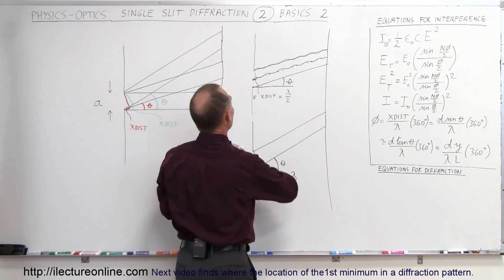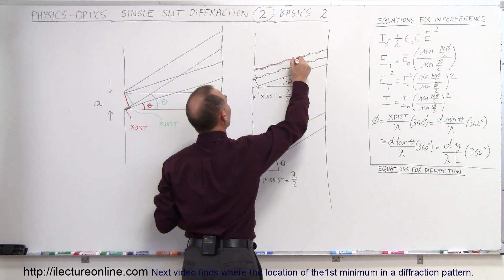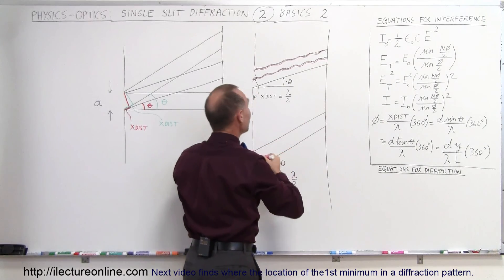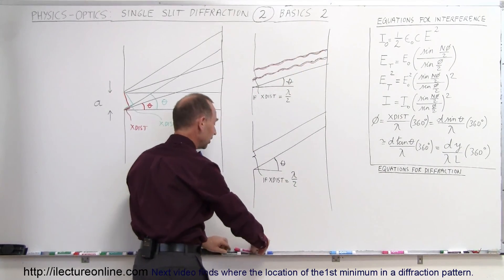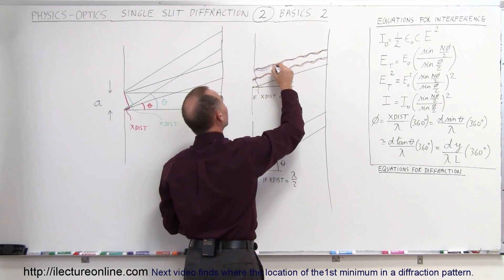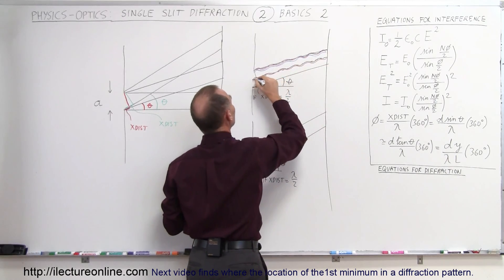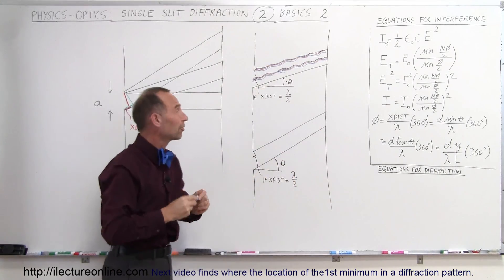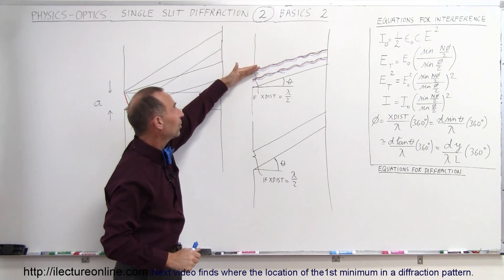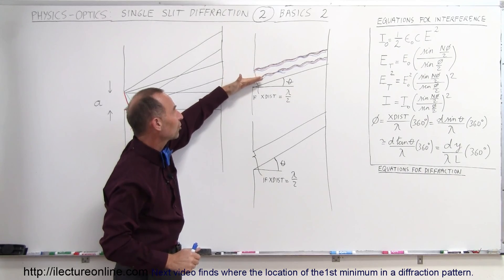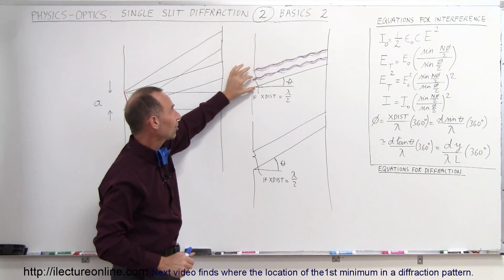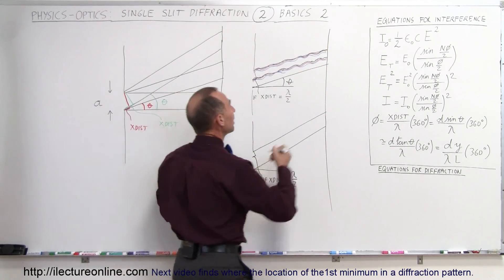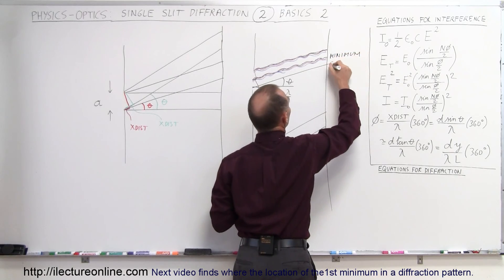If you look at the next ray right below that, and then the ray below that, again those two rays will be exactly a half wavelength out of phase and will cancel each other out. Every small section of the upper half of the beam will cancel out a corresponding section of the lower half, so this first half of the beam cancels the second half and you see nothing — complete destructive interference — and therefore you see a minimum.